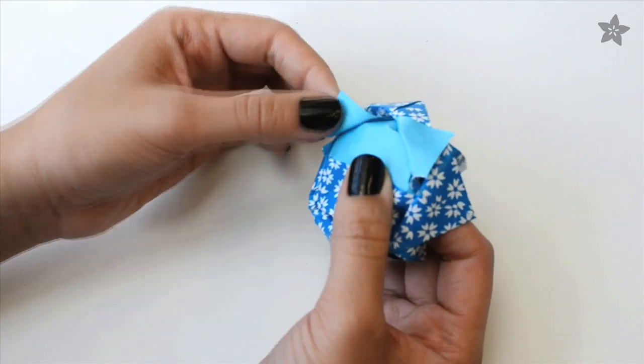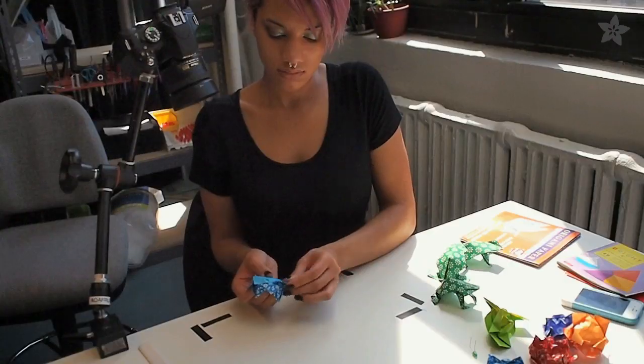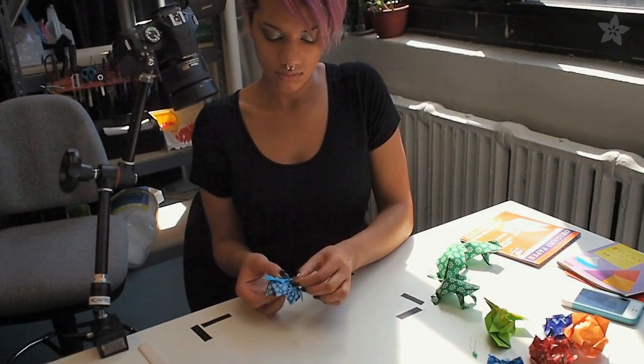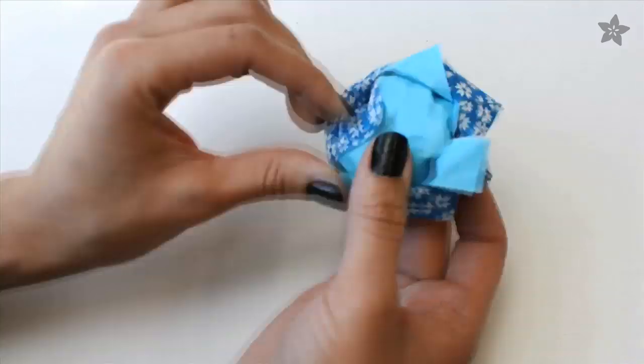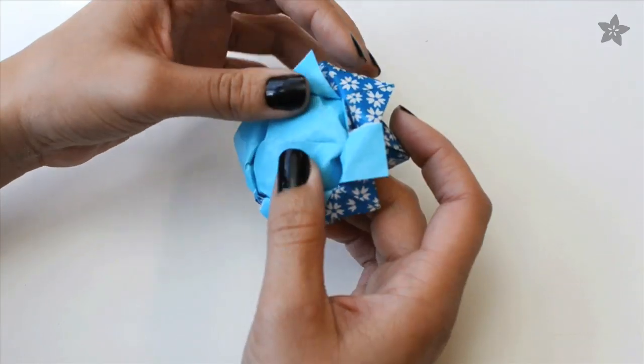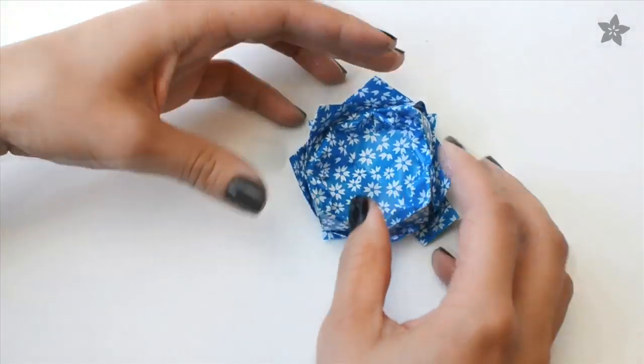And finally, peel back the final layer of petals exposing the other side of the paper at the very bottom of the lotus and this will also make the center of the flower only one layer of paper thick, which will make it easy to install our LED later.